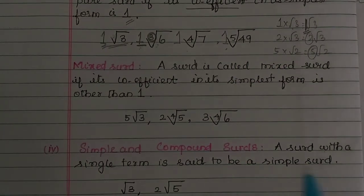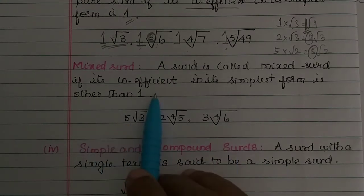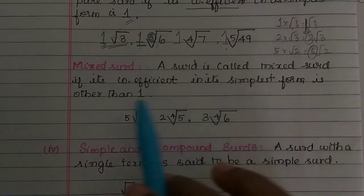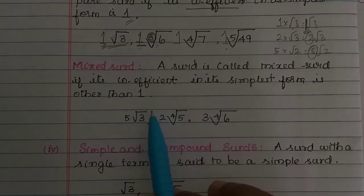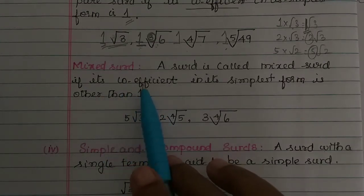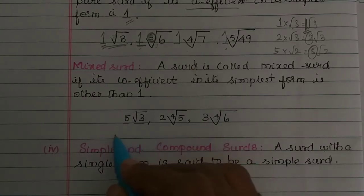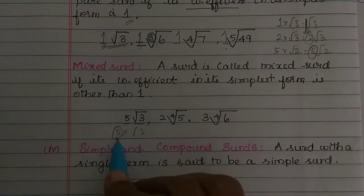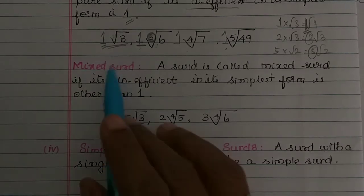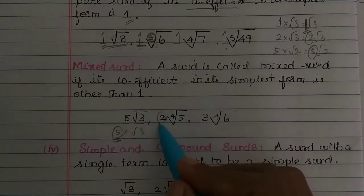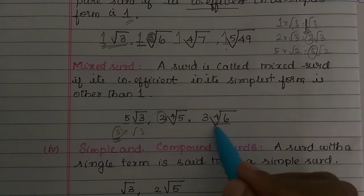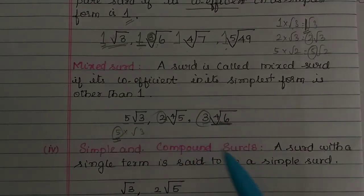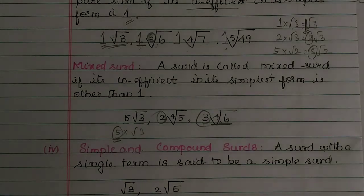A surd is called a mixed surd if its coefficient in its simplest form is other than 1. For example, 5 root 3 has coefficient 5, which is not 1, so it is a mixed surd. We only need to look at the coefficient to determine whether it is a pure or mixed surd.